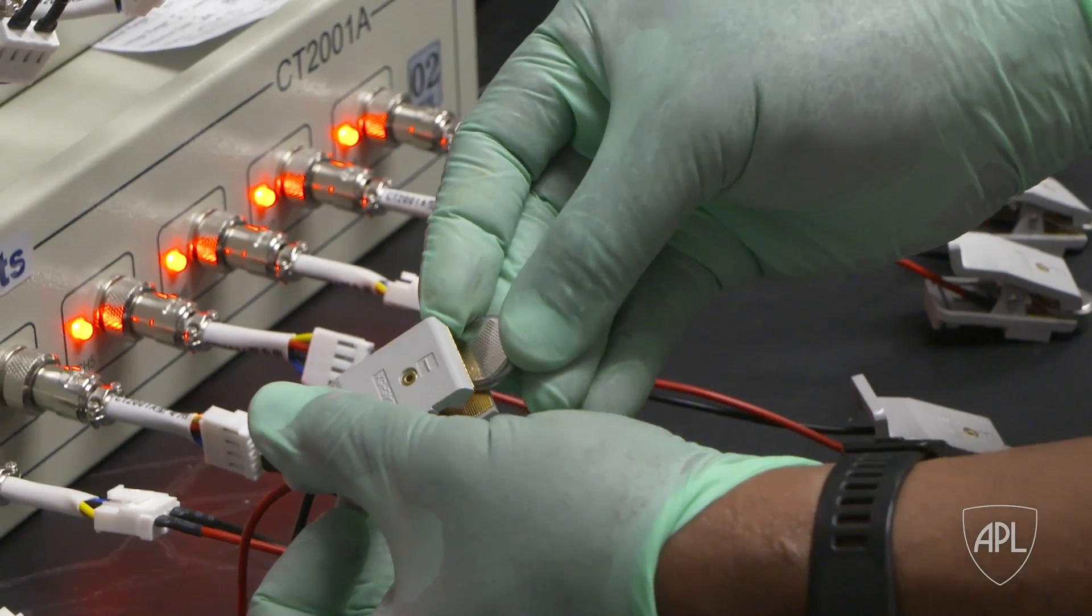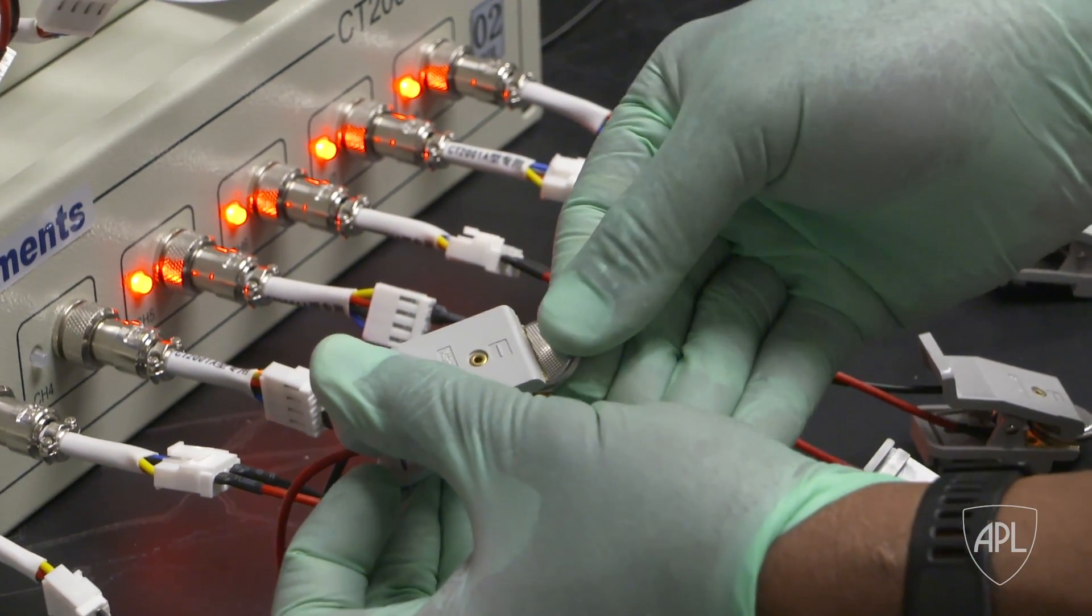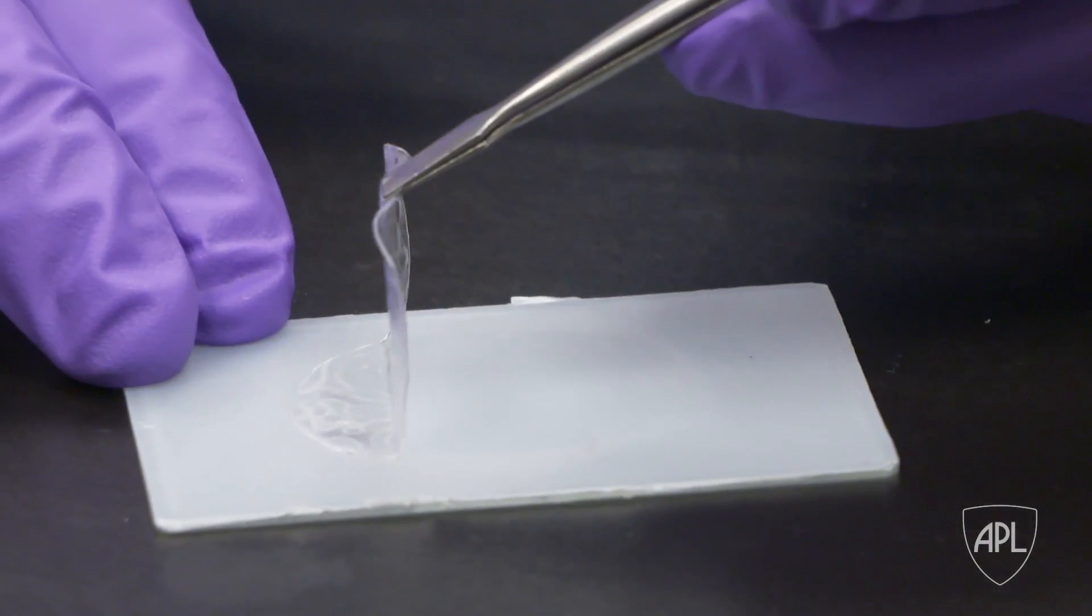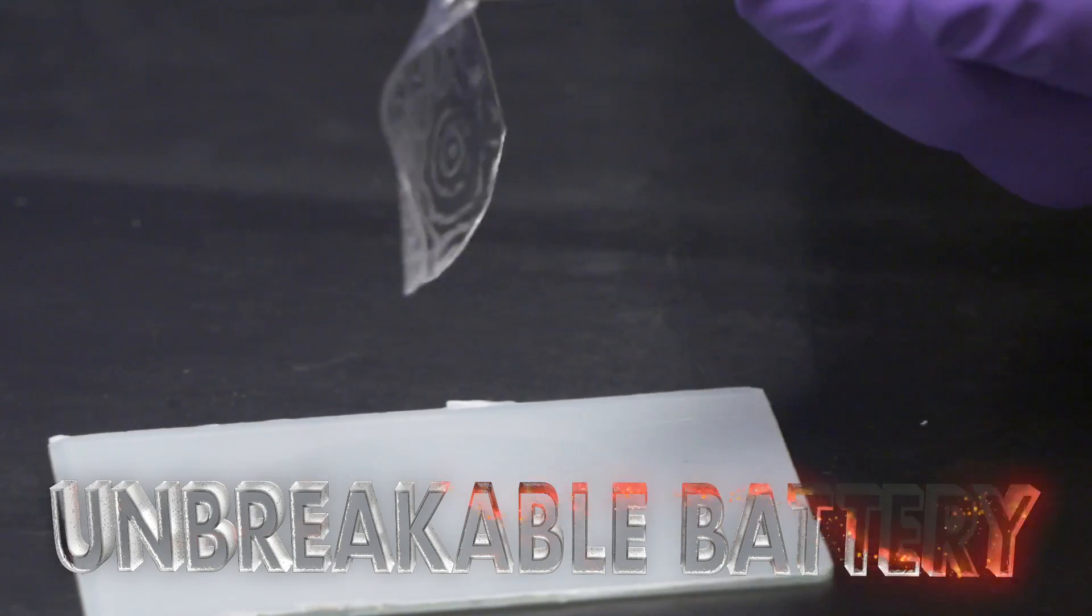A team at the Johns Hopkins Applied Physics Lab decided to do something about it. Introducing the flexible polymer lithium ion, the unbreakable battery.